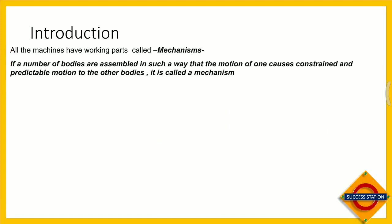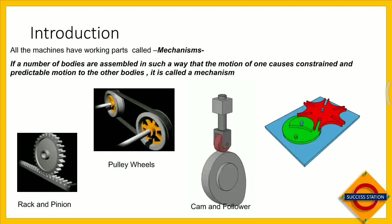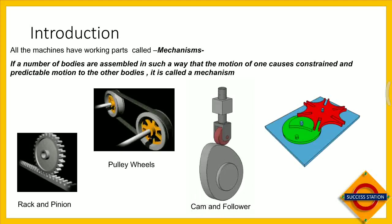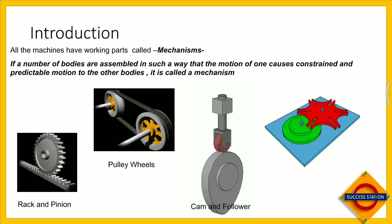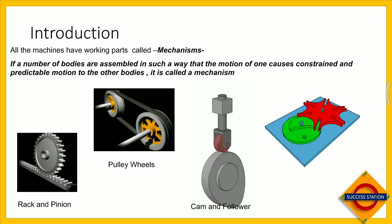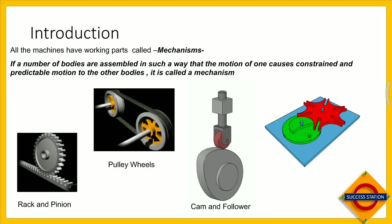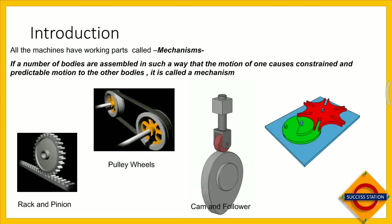All machines have working parts called mechanisms. If a number of bodies are assembled in such a way that motion of one causes constrained and predictable motion to the others, it is called a mechanism. Ek se zyada bodies is tarah se arranged hain ki ek ke motion ke karan doosra body bhi motion karne pe compel ho — aur woh motion predictable ho.